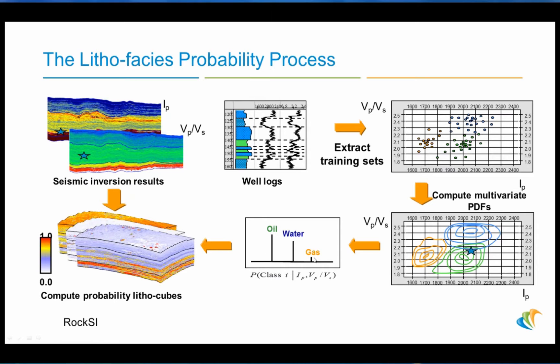It will create three volumes: a probability volume for gas, a probability volume for water, and a probability volume for oil. Then a fourth cube would be created, which will be the winner — the most likely lithophases type at each point in the survey.